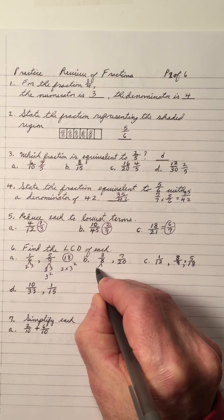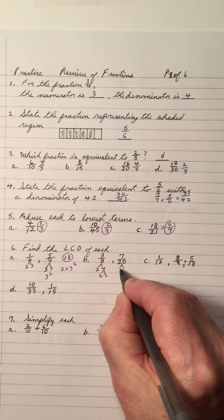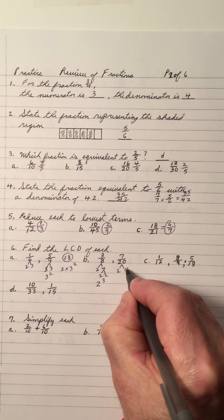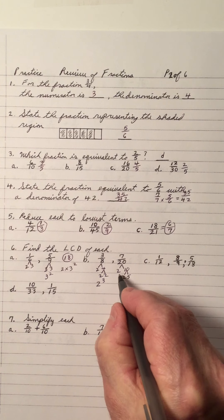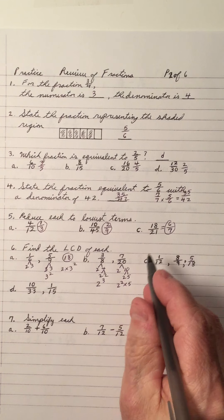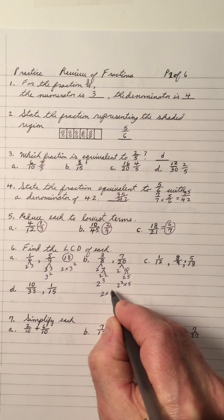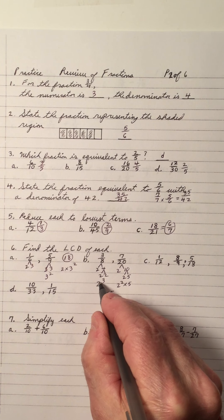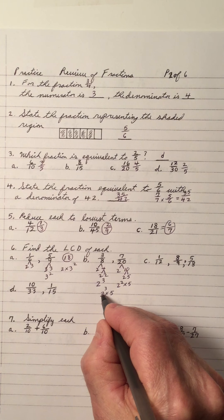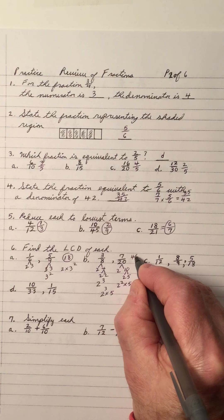For denominators 8 and 20: 8 is 2 cubed, 20 is 2 squared times 5. We need each factor — a 2 and a 5. The largest exponent of 2 is 3, so 2 cubed is 8, and 8 times 5 is 40. The LCD is 40.